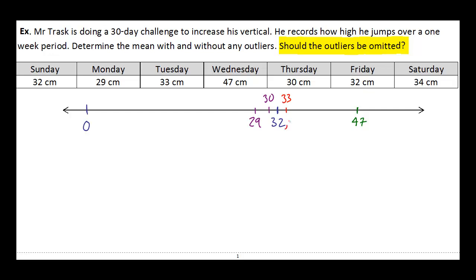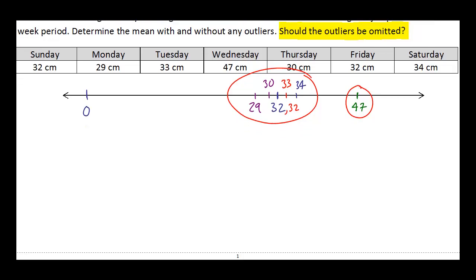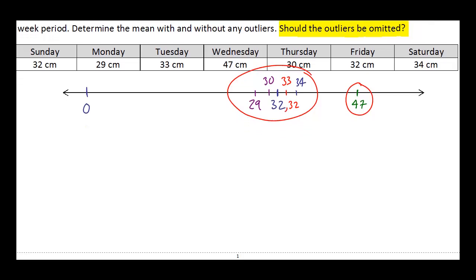And then I've got a 34 as well. Okay, now as soon as we put it in a number line like this, what we start to notice is we have like a real cluster of data points right here, where this 47 really seems to be kind of on the outside. And that's exactly what we mean by an outlier. It's sort of significantly bigger than the rest of these other numbers.